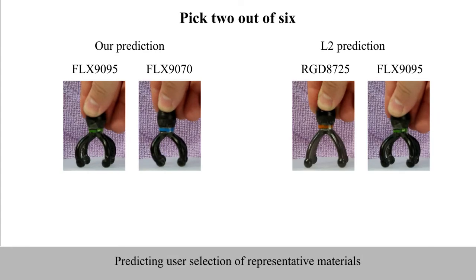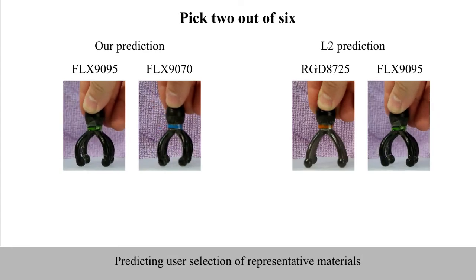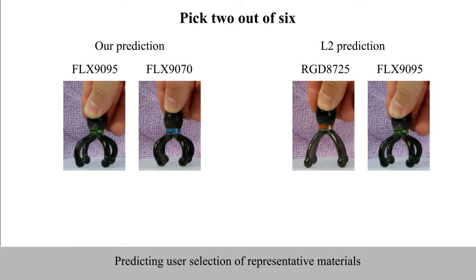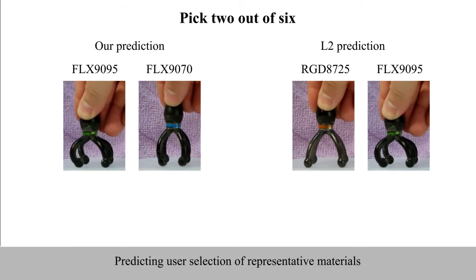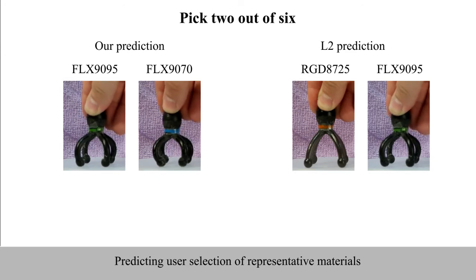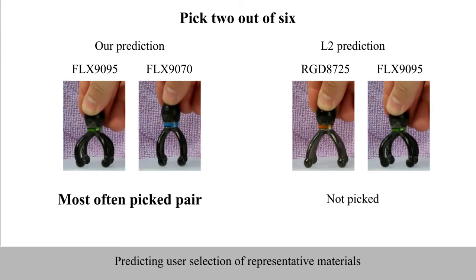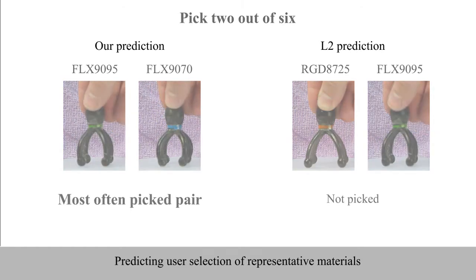In the first study, we presented participants with six 3D printed octopus toys. Their task was to select the two most representative octopi. We predicted the choice using our model and LQ norm. The pair predicted using our model was the most often picked one, meanwhile the LQ prediction was never chosen.